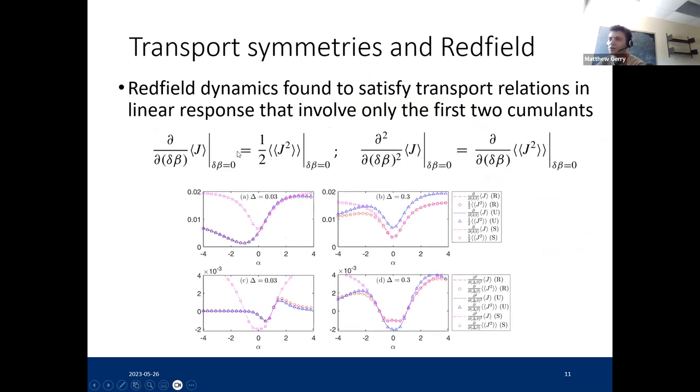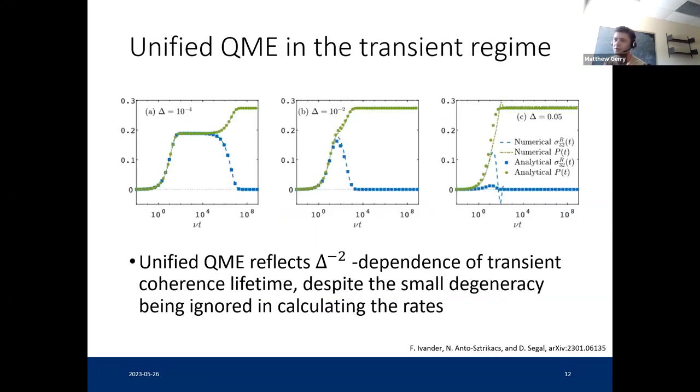The last thing we looked at here was these transport relations. So the Green-Kubo relation, essentially like a version of the fluctuation dissipation relation, and also this transport relation concerning higher order derivatives of the statistics of the heat current. For all three master equations we considered, including Redfield, we see that these are satisfied. These are related with fluctuation symmetry. And because they only involve these first two cumulants, even the Redfield equation, which generally violates fluctuation symmetry, we've still found that they satisfy these relations in linear response.